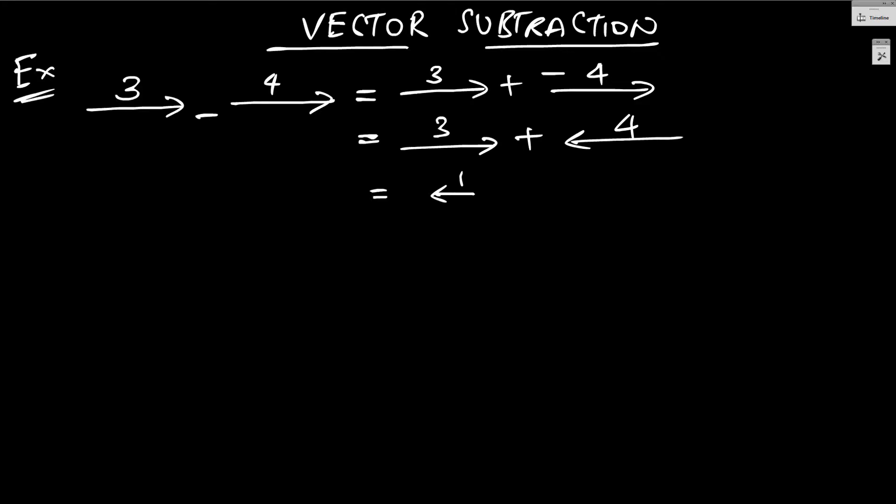Notice that when the two vectors are having an angle of 0, you get the minimum value. That means this is exactly opposite of addition, obviously, this is subtraction.